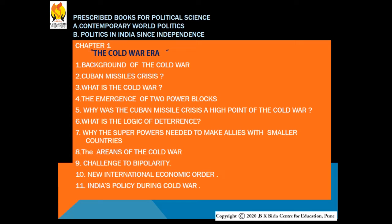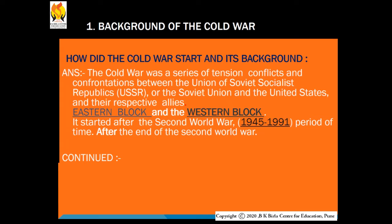The 11 factors are: first, background of the Cold War; Cuban Missile Crisis; what is the Cold War; the emergence of two power blocks; why was the Cuban Missile Crisis a high point of the Cold War; what is the logic of deterrence; why the superpowers needed to make allies with smaller countries; the arenas of the Cold War; challenge to bipolarity; new international economic order; and India's policy during the Cold War.